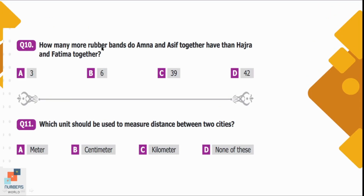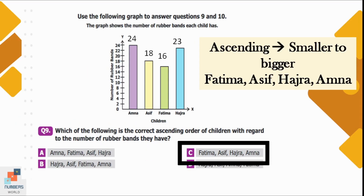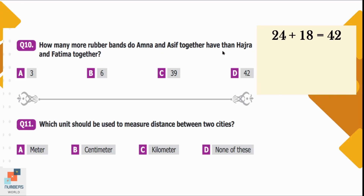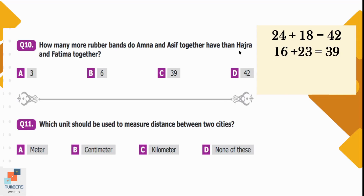Question number 10: How many more rubber bands do Amna and Asif together have than Hajra and Fatima together? Amna has 24, Asif has 18, Fatima has 16, and Hajra has 23 rubber bands. Amna and Asif together have 42. Hajra and Fatima together have 39. The difference is 42 minus 39, which equals 3. Option A is the correct option.